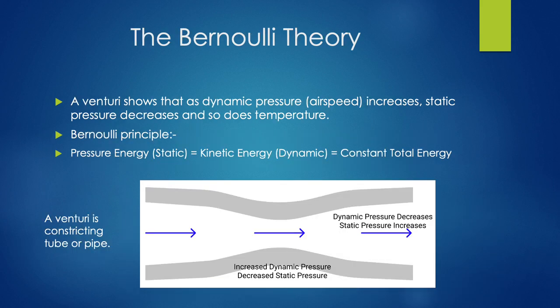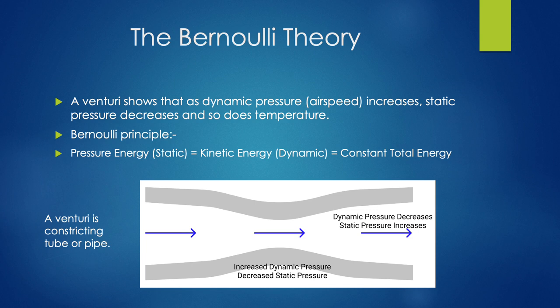Next we're going to look at the Bernoulli theorem. The Bernoulli theorem looks at a body of air moving through a venturi — a constricting tube or pipe that gets narrow in diameter. As air moves through a venturi, it changes state: the dynamic pressure, or speed of the air, will increase; the static pressure will decrease; and the temperature will decrease as well. His theorem states that pressure energy equals kinetic energy, which equals the constant total energy. This forms the basis of how an aerofoil creates lift and makes an aircraft fly.